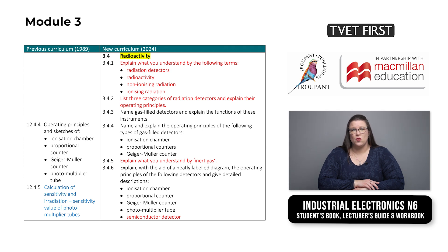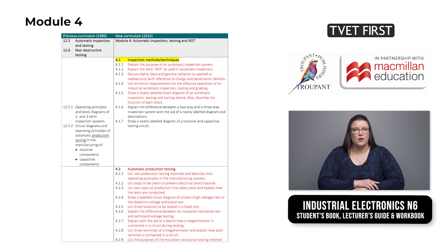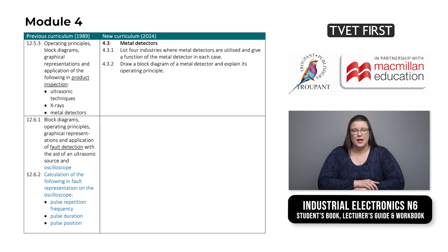The old section 12.4.5 on calculations involving photomultiplier tubes does not appear in the new syllabus. The new Module 4, which is called Automatic Inspection, Testing and NDT, covers sections 12.5 and 12.6 of the old syllabus. A large part of the section on inspection methods is new. Section 4.2 on automatic production testing introduces new concepts such as the high pot or high voltage test, the dielectric voltage withstand test, the insulation resistance test and the use of a megohmmeter. Fault detection and calculations involving an oscilloscope have been taken out of the syllabus.